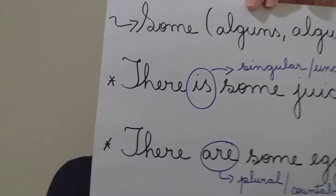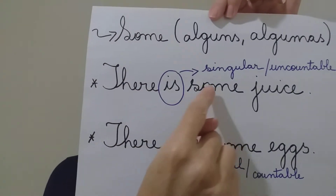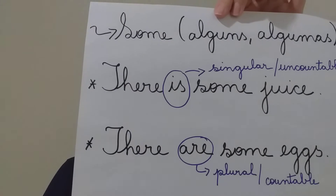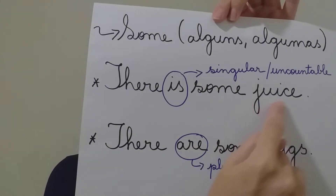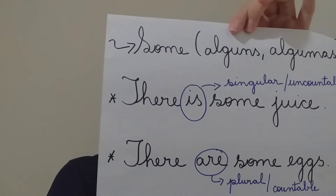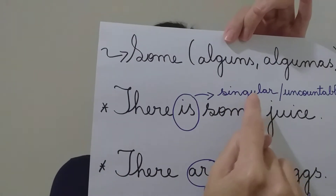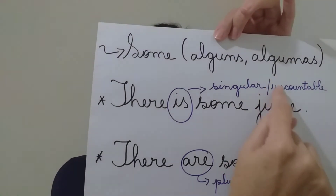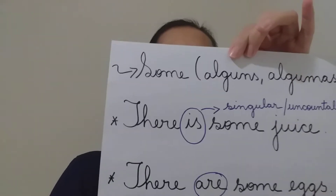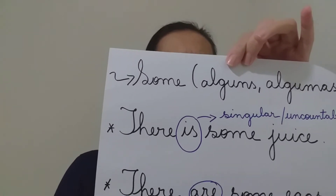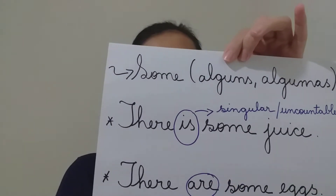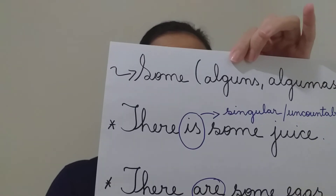Agora nós vamos aprender que quando nos referimos a comida — seja bebida ou comida que nós não podemos contar, nós chamamos de uncountable, ok? E nós usamos o verbo to be 'is', singular. There is some juice — você não consegue contar o juice, então nós vamos usar o verbo to be 'is', singular. Ele está no singular. Uncountable — nós não conseguimos contar o suco. Um líquido.